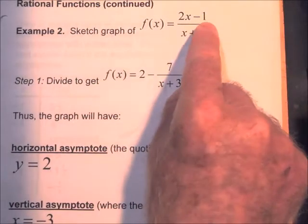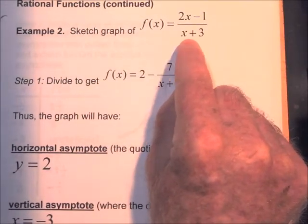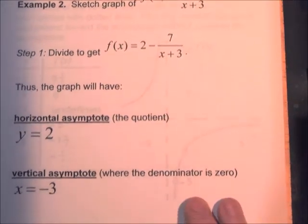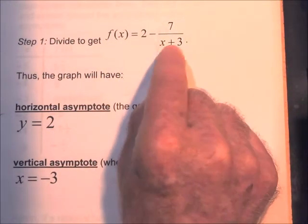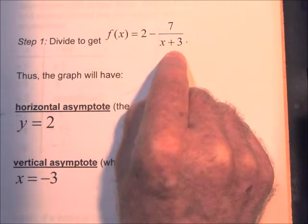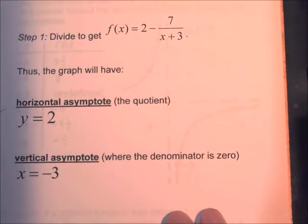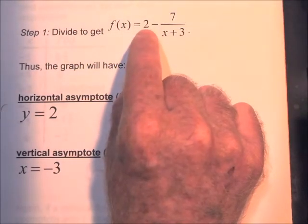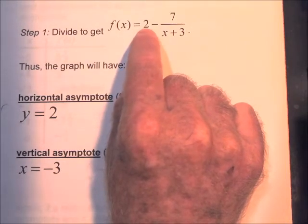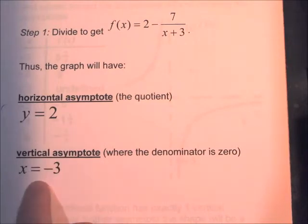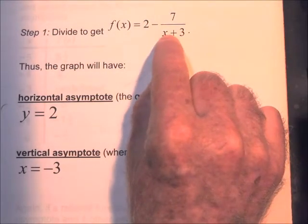Another example: f of x equal to 2x minus 1 over x plus 3. Again, we start by dividing to get the asymptotes. We get a quotient of 2 with a remainder of negative 7, so f of x equals 2 minus 7 over x plus 3. This tells us we'll have two asymptotes. The quotient gives a horizontal asymptote with slope 0: y equal to 2. The denominator gives a vertical asymptote.